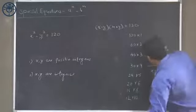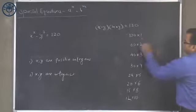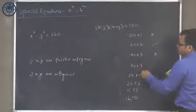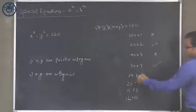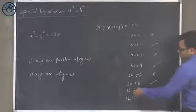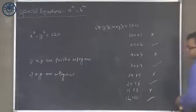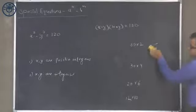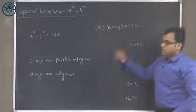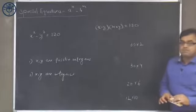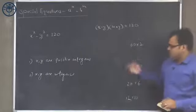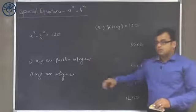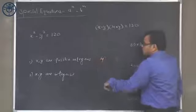Applying the parity filter: 120×1 is even-odd, not acceptable. 60×2 is even-even, acceptable. 40×3 is even-odd, not acceptable. 30×4 is even-even, acceptable. 24×5 is even-odd, not acceptable. 6×20 is even-even, acceptable. 8×15 is even-odd, not acceptable. 10×12 is even-even, acceptable. So these four cases satisfy the condition and give positive integer values of x and y. The answer for case one is 4.